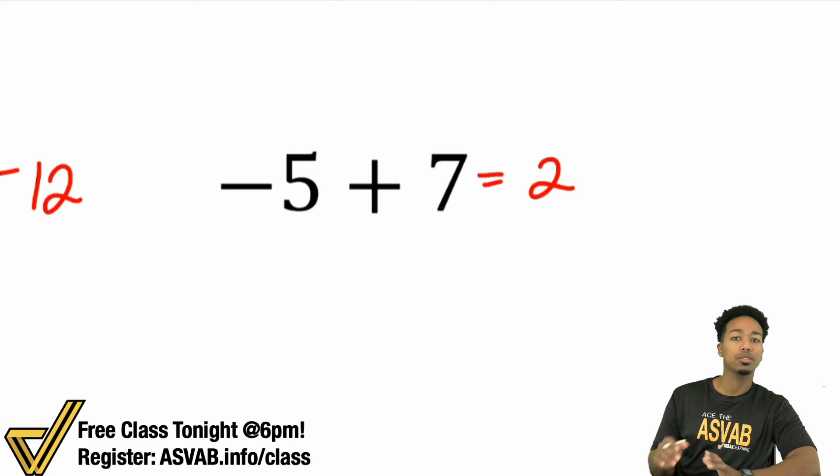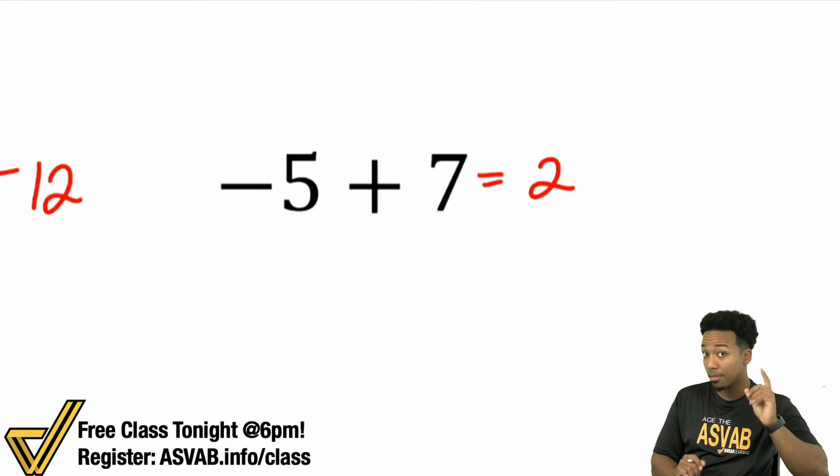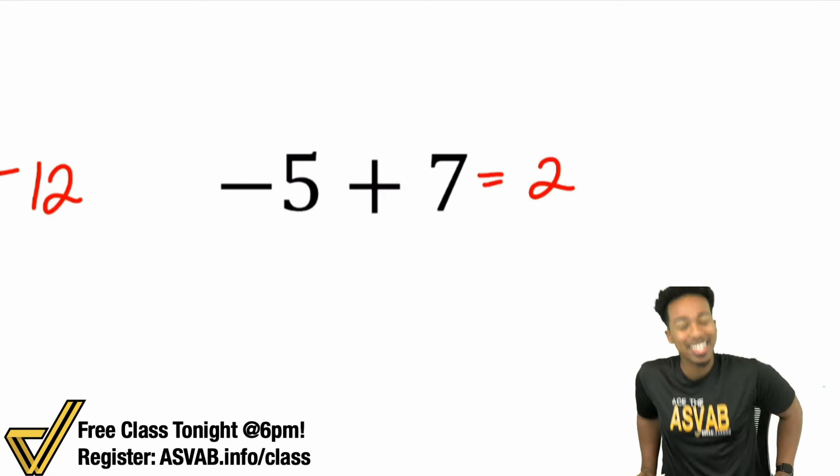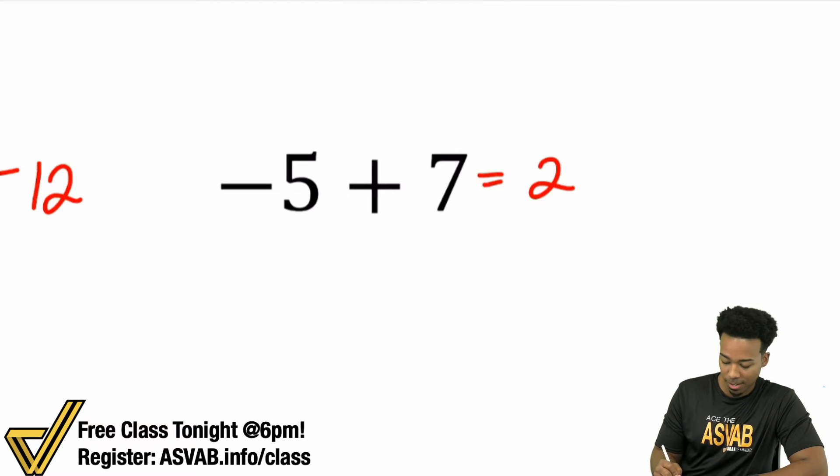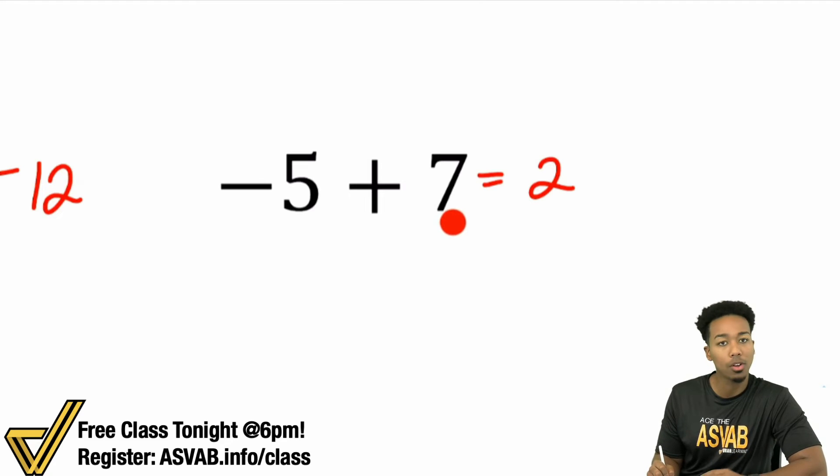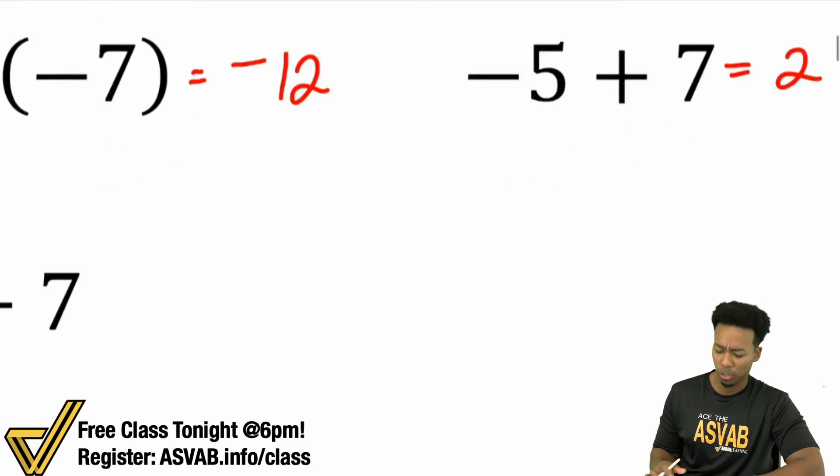And now there's another rule that we can follow here, a more concrete rule. When you're adding 2 numbers and you're adding 1 positive and 1 negative, really what you're doing is you're just going to subtract the numbers and keep the sign of the bigger number. Again, when you're adding numbers that are opposite in sign, you just subtract the numbers and you'll keep the sign of the bigger number. So negative plus a positive. Let's follow the rule. 7 minus 5 is going to be 2, and you're going to keep it as a positive 2 because the 7 is the bigger number.